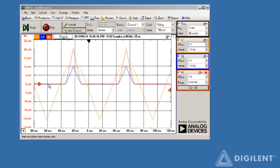We've already created a math channel which gives us the current through the diode, the red line, so all we need to do is generate the XY plot.